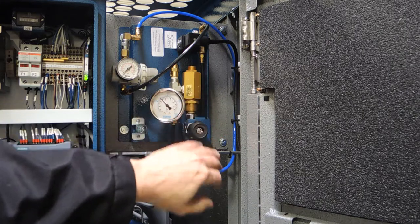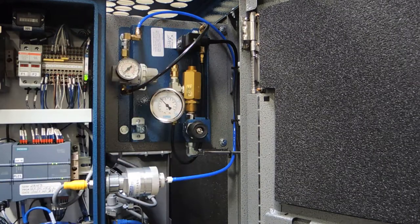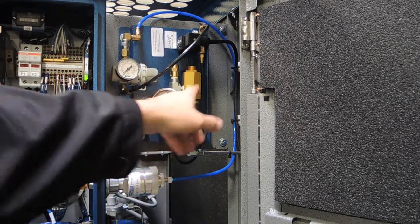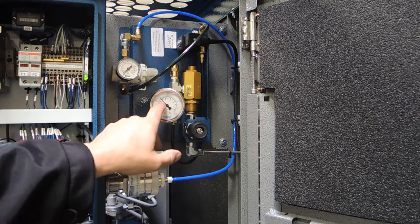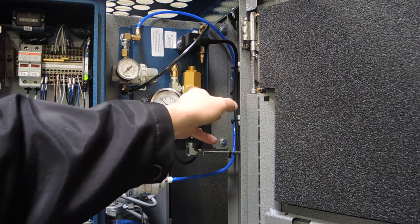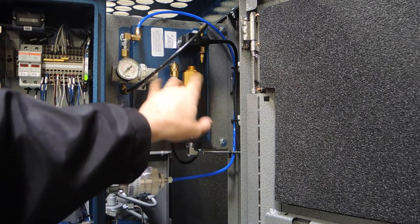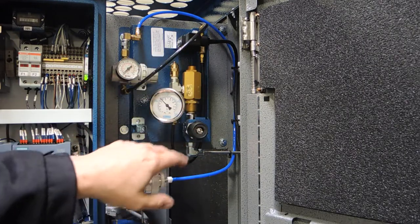This is more of a maintenance valve. If you had to work on the system, you can turn off your high pressure air there to do any work on the system. It's actually got a low pressure regulator. We're taking the 6,000 psi and bringing it down to about 65-70 psi through this low pressure adjustable regulator, which also has a relief valve on it. If the regulator goes bad, the relief valve will pop off and protect the rest of the system.